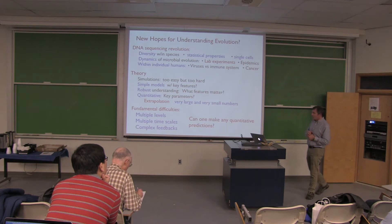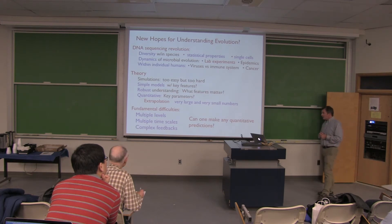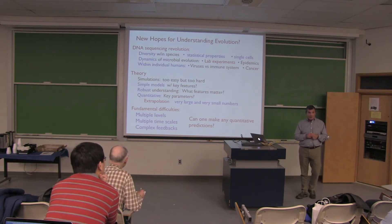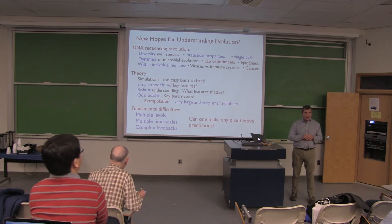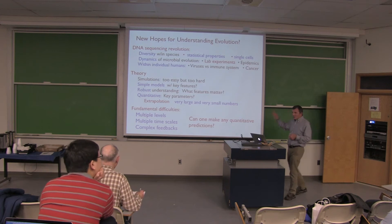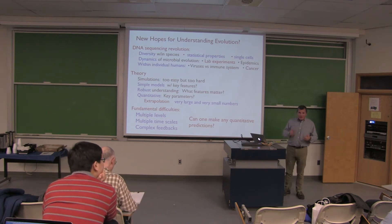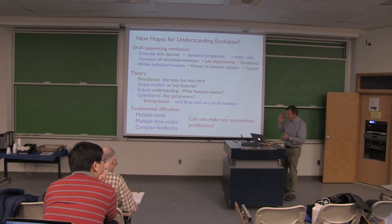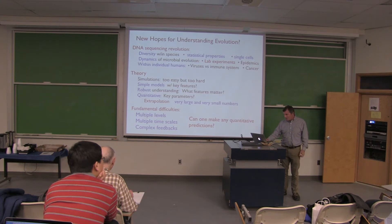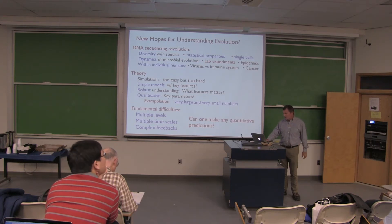We'd like robust understanding of which features matter and which don't, and quantitatively what the key parameters are. One must be able to extrapolate over very large and very small numbers that come into evolutionary processes, even things you can follow in real time in the lab. There are fundamental difficulties: multiple levels on which evolution takes place, multiple timescales, all kinds of complex feedbacks. A basic question is: can we predict anything quantitatively? To zeroth order when we started, we almost said no — there were almost no non-trivial things that could be predicted.